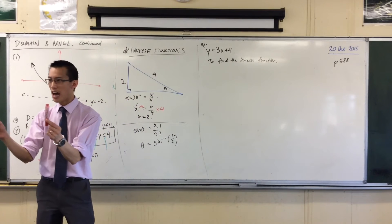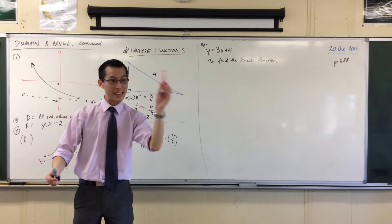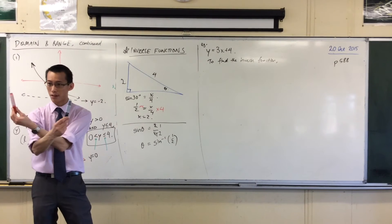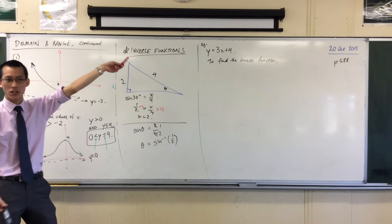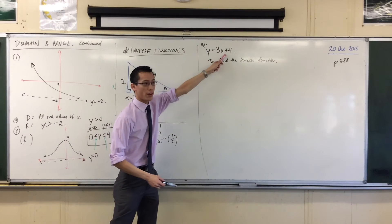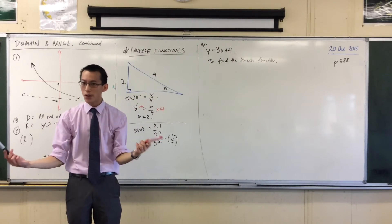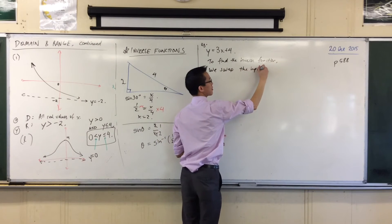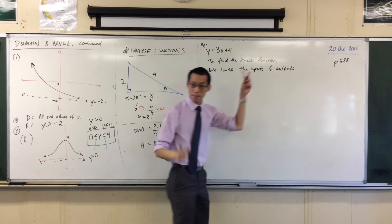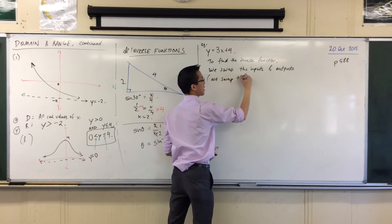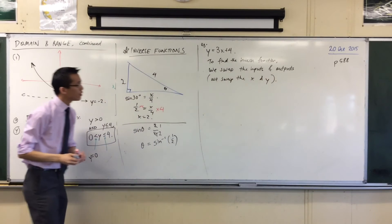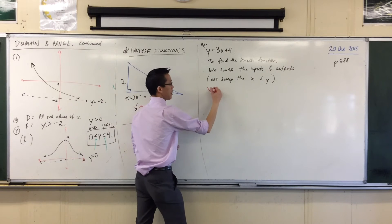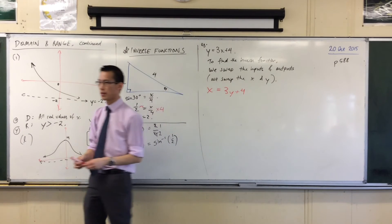What I want to do is, instead of taking an input and getting an output, I want to go in reverse. I don't want to put an input and get the output. I want to know, if you know what the output was, can you tell me the input? Does that make sense? I'm trying to go in the other direction. So, being that I'm trying to switch things around, what name have we given the inputs and outputs in this equation? We've just put symbols on them, x and y. That's our input, and that's our output. But I want to switch them around. I want to go in the opposite direction. So, to find the inverse function, we swap the inputs and outputs. Or, to put it in symbolic terms, we swap the x's and y's.